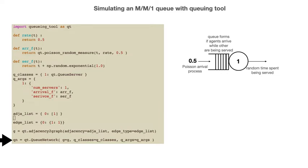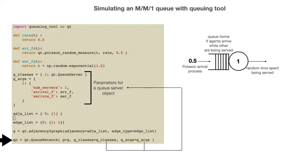The second two arguments passed to the constructor are the variables queue_classes and queue_args. These variables are dictionaries that contain the parameters for defining the various queue objects used in our network. In our simulation of the MM1 queue we have only one type of queue server object. The most important things we need to tell queuing tool are how to generate the random variables that determine the times between arrivals and the amount of time it takes each customer to get served.